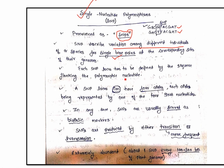Each SNP locus has to be defined by the sequence flanking the polymorphic nucleotide. Flanking sequence means the sequence representing the right and left border of the SNP locus. A SNP locus can have four alleles — because there are four DNA nucleotides: A, T, G, and C. So instead of G, there can be T, A, or C, meaning four possible alleles, each represented by one of the four DNA nucleotides.